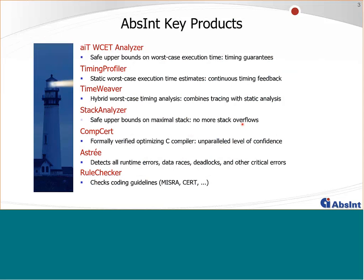Our products include several tools in the area of timing analysis for real-time software. The first is AIT, a worst-case execution time analyzer — a static analyzer working on binary code that computes guaranteed upper bounds on the worst-case execution time of tasks. The timing profiler aims at early development stages to quickly estimate worst-case execution time, so you can optimize timing behavior during development. The time weaver targets high-performance multi-core processors using hybrid worst-case execution time analysis, extracting timing information from non-invasive real-time instruction traces.